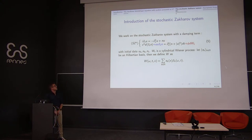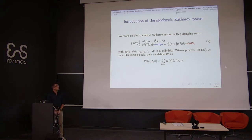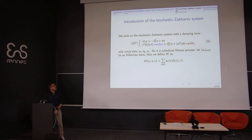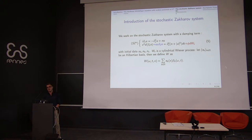In the deterministic case, that is without the blue and red terms, this system was introduced by Zakharov in 1972, and the first results came from Sulem and Sulem in 1979, where they established global well-posedness results. More general results came from Bourgain, Colander, and more recently Ginibre, Tsutsumi, and Velo. In the deterministic case, formally passing to the limit as epsilon goes to zero, one can identify n with minus the modulus of u squared, and substituting into the first equation recovers a nonlinear cubic Schrödinger equation.